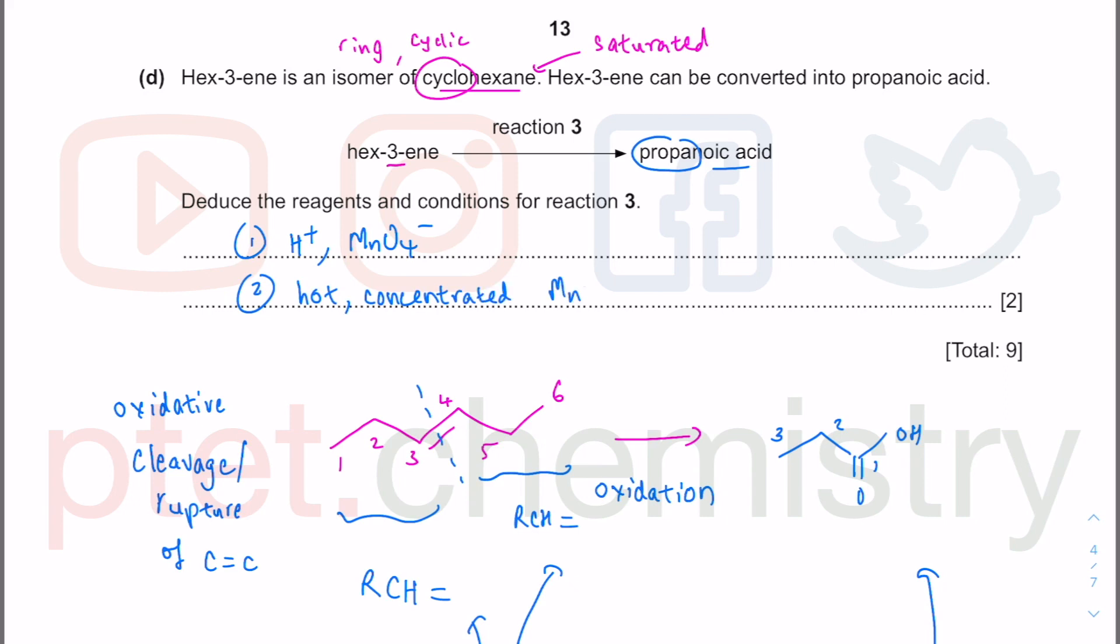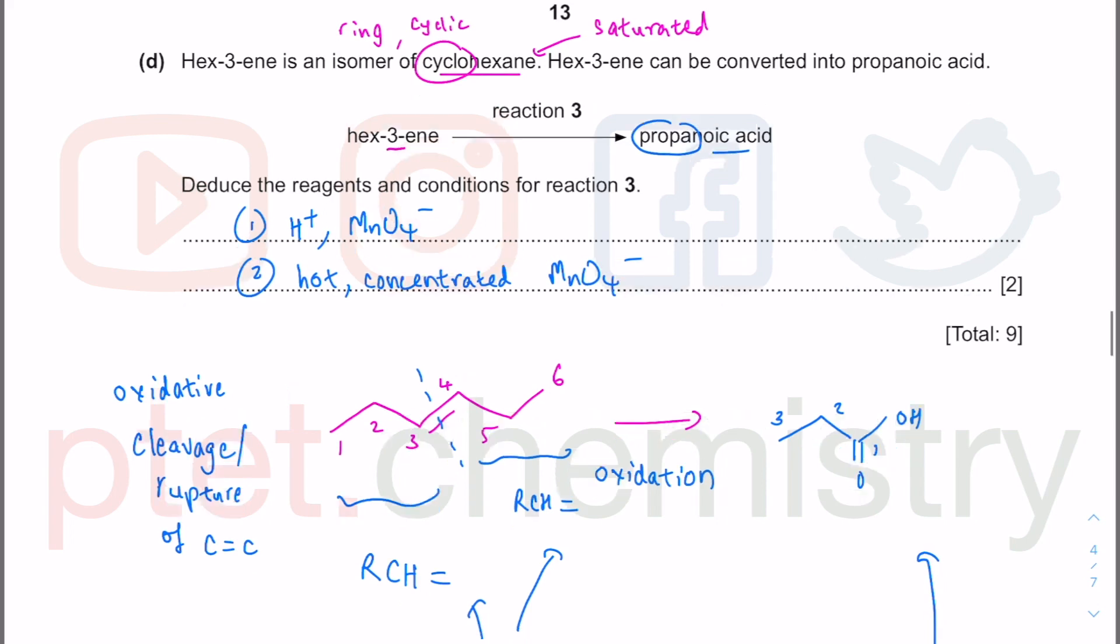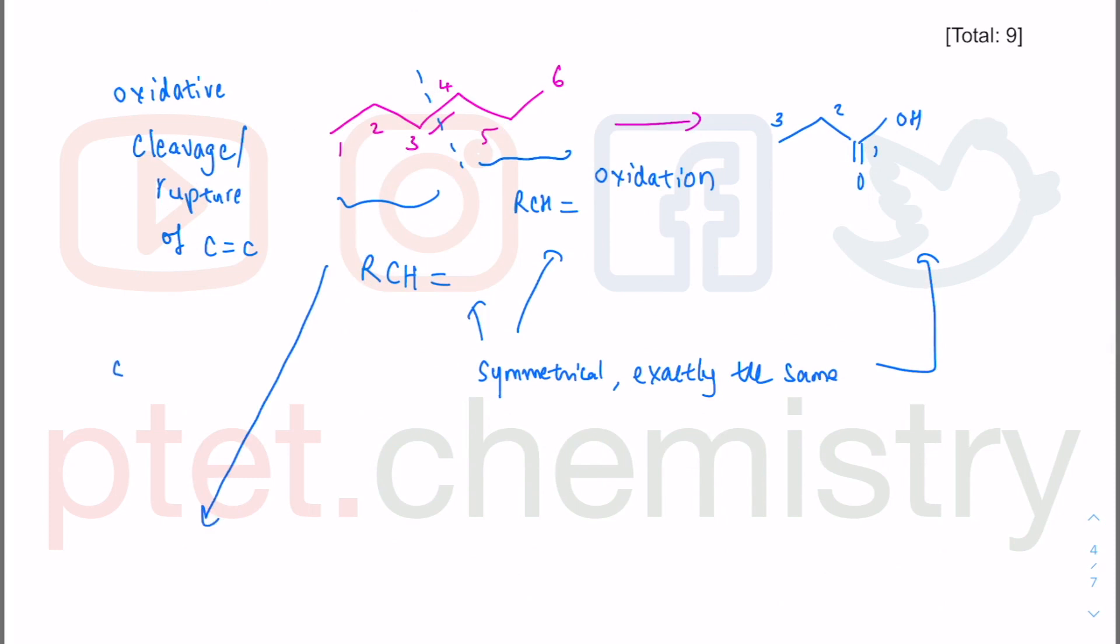You need to heat it up. You don't keep it cold. If it is cold and dilute you will just form diol where this becomes OH and OH. You will get hexane-3,4-diol if you do it under cold dilute KMnO4. So if I do this cold dilute acidified MnO4-, this is going to give me that and that, and there will be three and four. This will give me hexane-3,4-diol.